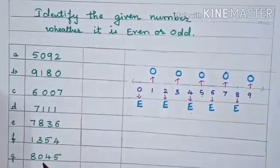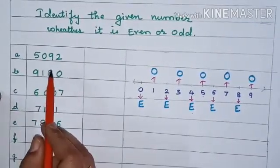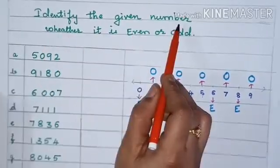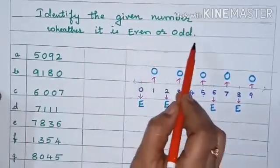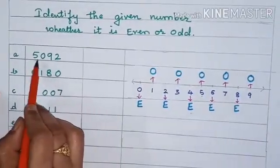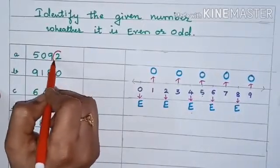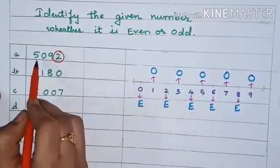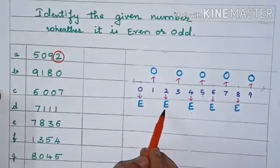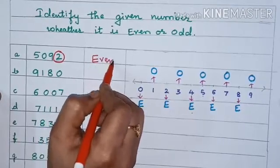So now here I have taken some examples. Let us find out whether each number is even or odd. Identify the given number whether it is even or odd. First one: 5,092. Children, see this last digit — it is 2. So this number ends with 2. So 2 is an even number, and this 5,092 is an even number.